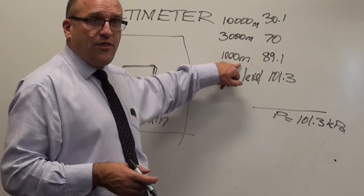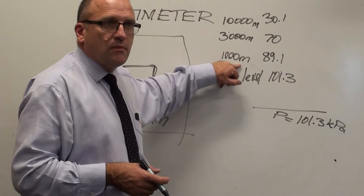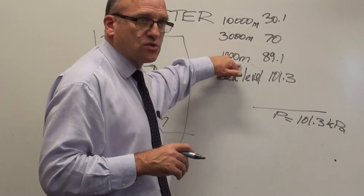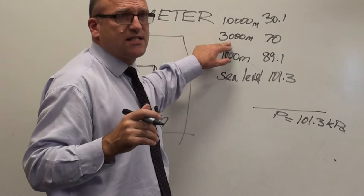You go 1,000 meters, it's 89, so it's 10% difference. That's basically Central West New South Wales. Air pressure is 10 kilopascals lower, being 1,000 meters above sea level.